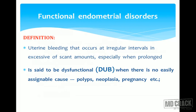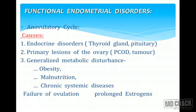Functional endometrial disorders are defined as uterine bleeding occurring at irregular intervals, in excessive or scant amounts, especially when prolonged. It is called dysfunctional uterine bleeding (DUB) only when there are no assignable causes — once you rule out endometrial polyps, endometrial carcinoma, or pregnancy, and there is no underlying cause for the excessive bleeding.